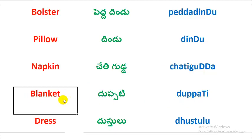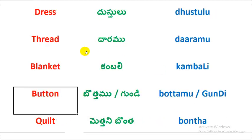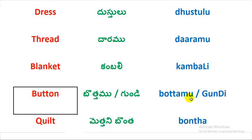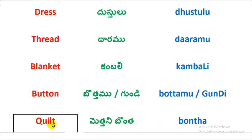Blanket — Kambali. Button — Gundi. Felt — Metheni Bontar. Thread — Dharamu.